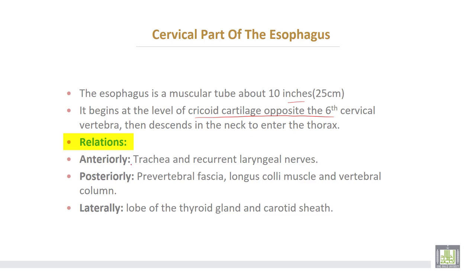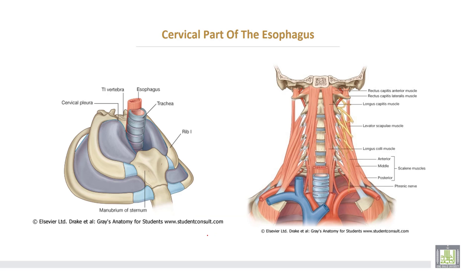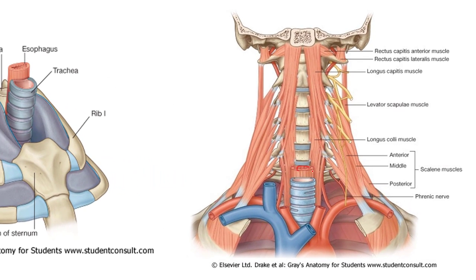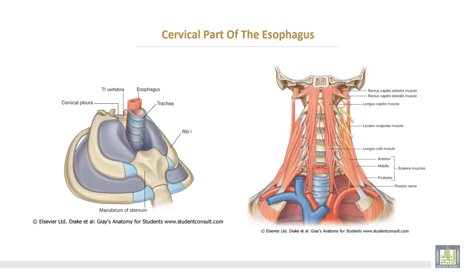Relations of the cervical oesophagus: anteriorly, the trachea and recurrent laryngeal nerves. Posteriorly, the prevertebral fascia covering prevertebral muscles such as longus colli and the vertebral column. Laterally, the lobes of the thyroid gland and the carotid sheath.